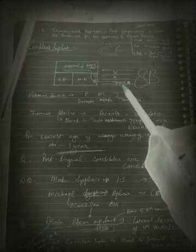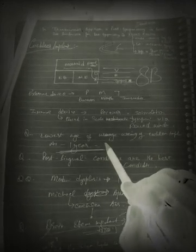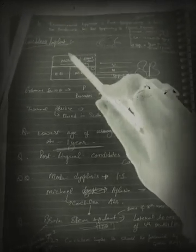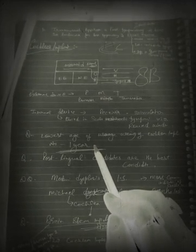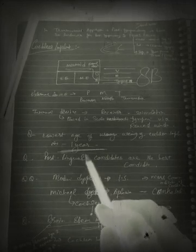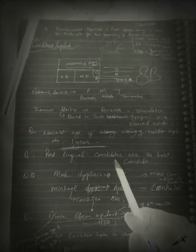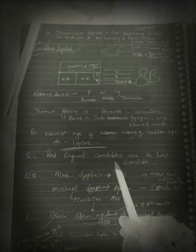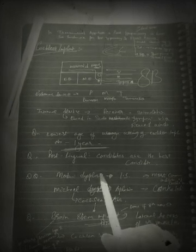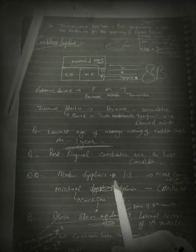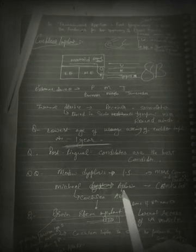The lowest age of use for cochlear implant is 1 year, and the best candidates are post-lingual patients. The most common indication is Mondini dysplasia of the cochlea, in which there are only 1.5 turns present. The contraindication is Michel aplasia, where there is total absence of the cochlea.